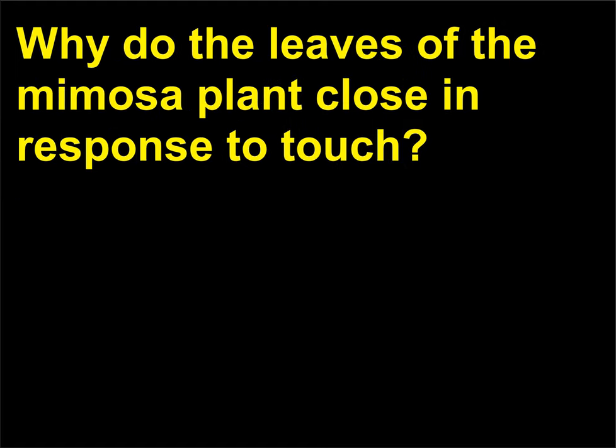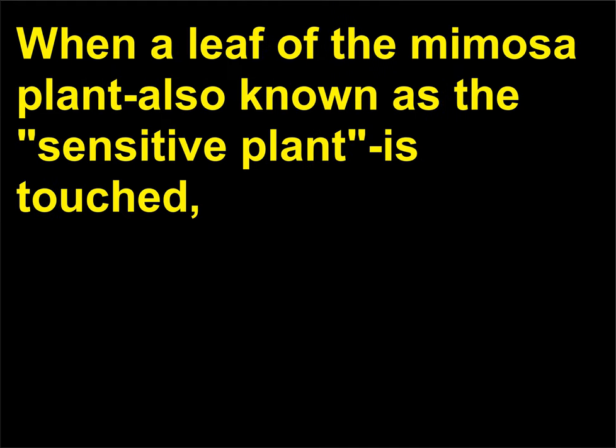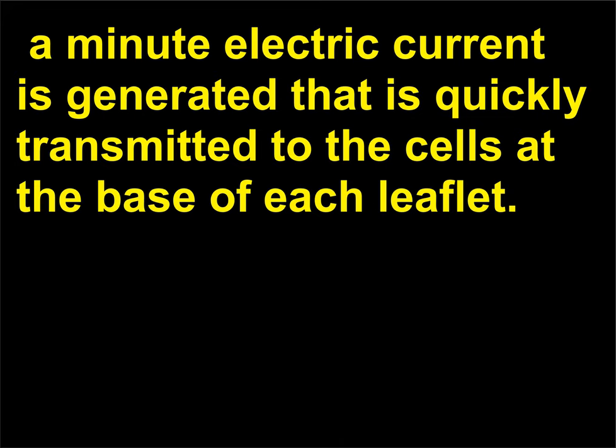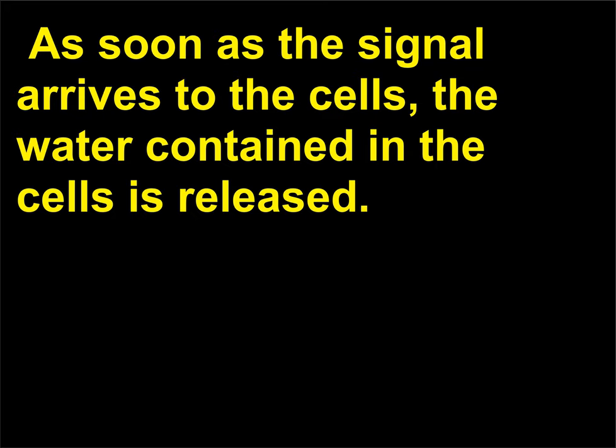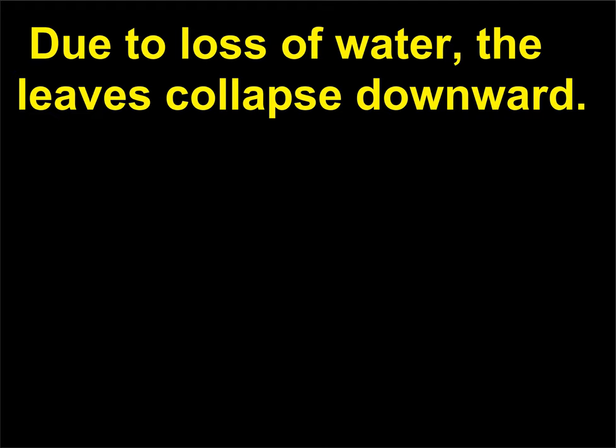Why do the leaves of the mimosa plant close in response to touch? When a leaf of the mimosa plant, also known as the sensitive plant, is touched, a minute electric current is generated that is quickly transmitted to the cells at the base of each leaflet. As soon as the signal arrives, the water contained in the cells is released. Due to loss of water, the leaves collapse downward.